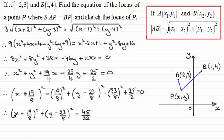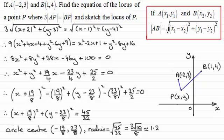When it's in this form, we should be able to find the center and radius. The center will be (-19/8, 23/8). The radius will be √(45/32). When I square root 45/32, you end up with 3√10/8, which is approximately 1.2.